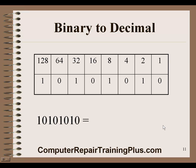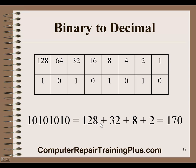Let's do one more before converting decimal to binary. This time we have the 128, the 32, the 8, and the 2 set. Bringing them all down: 128 plus 32 is 160, and 8 plus 2 is 10, so the total is 170. Now let's try decimal to binary.